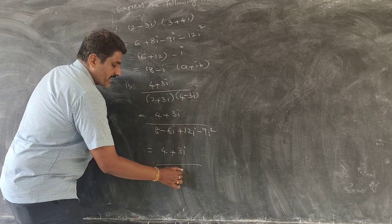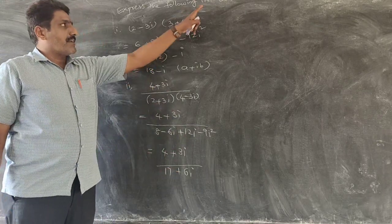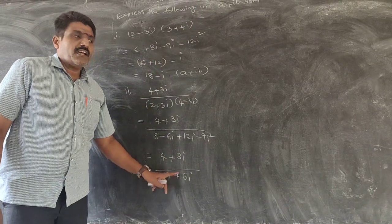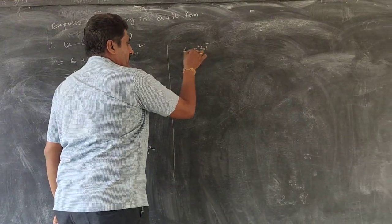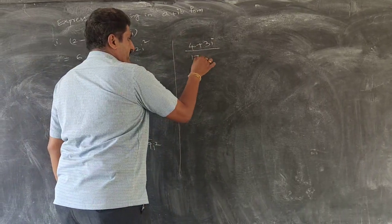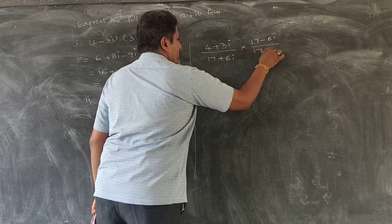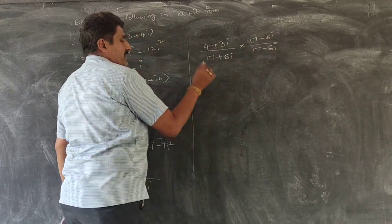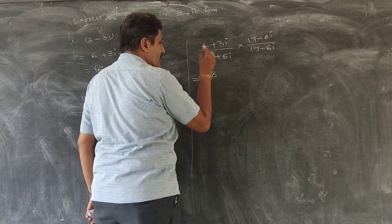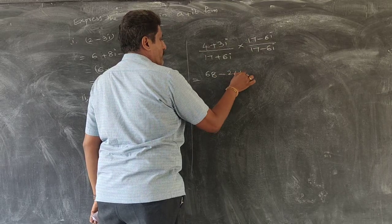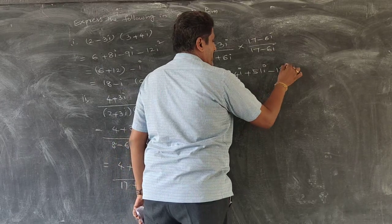We get (4 plus 3i) over (17 plus 6i). But this is not in the exact standard form of A plus iB, so we have to divide and multiply with the conjugate. The conjugate of (17 plus 6i) is (17 minus 6i). So dividing and multiplying by (17 minus 6i), we get 4 into 17 equals 68 minus 24i plus 51i minus 18i squared in the numerator.